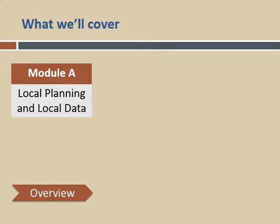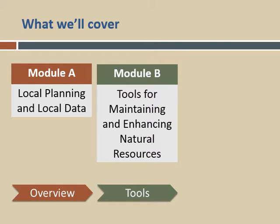Here's what's in this course. In Module A, we're going to start with some big picture concepts. We'll recap from NR1 why community planning is important and how it connects to natural resources. We'll also talk about local data and inventories. In Module B, we'll talk about the types of actions you can take — both non-regulatory and regulatory — and focus on the tools that are available.